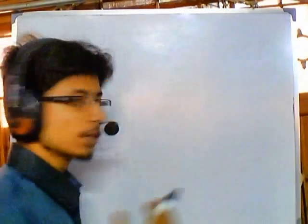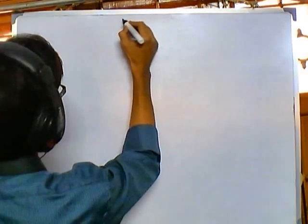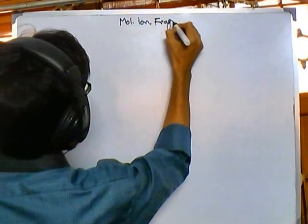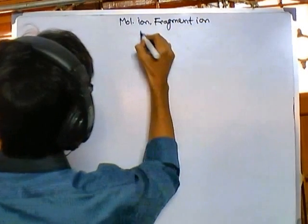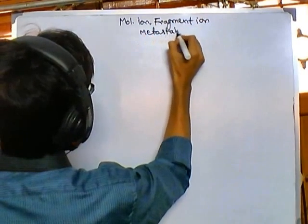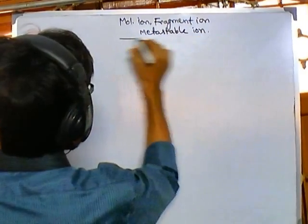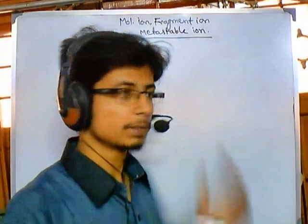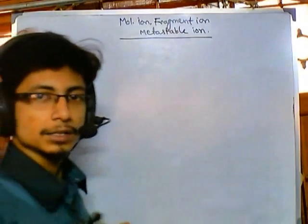Hello friends. In this video tutorial I am going to talk about three different types of ions in mass spectrometry: one is a parental ion which is a molecular ion, then the fragment ion, and then what is a metastable ion. So we'll be talking about ions — specifically molecular ion, fragment ion, and metastable ion. There are a lot of confusions regarding all of these names but actually these are very simple.